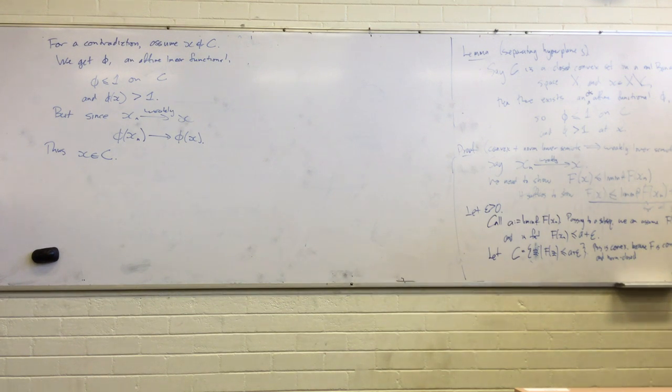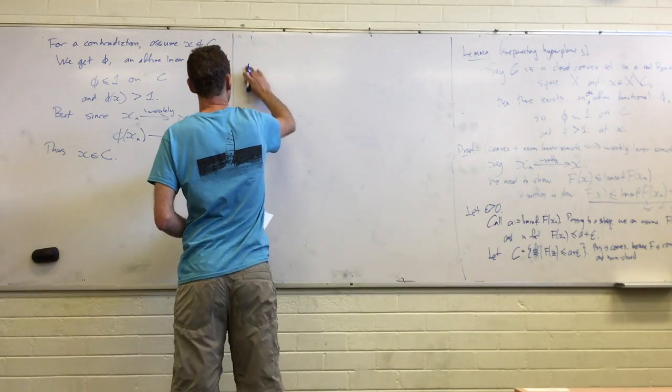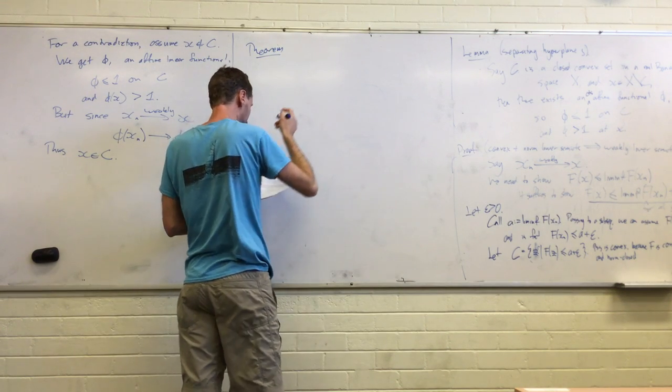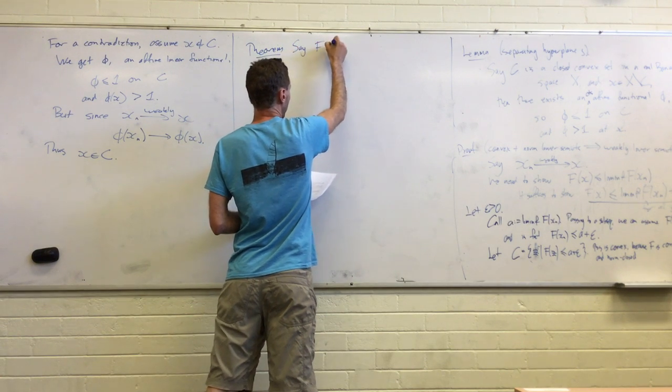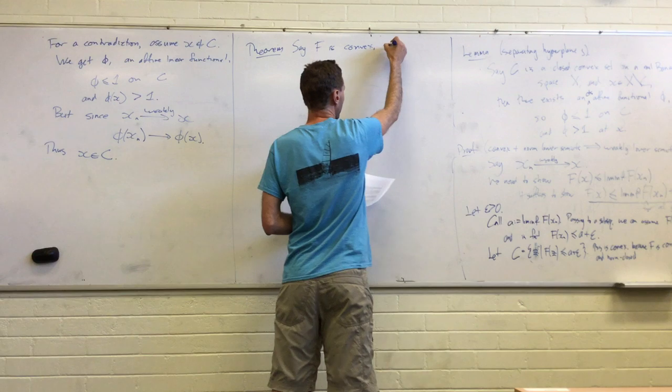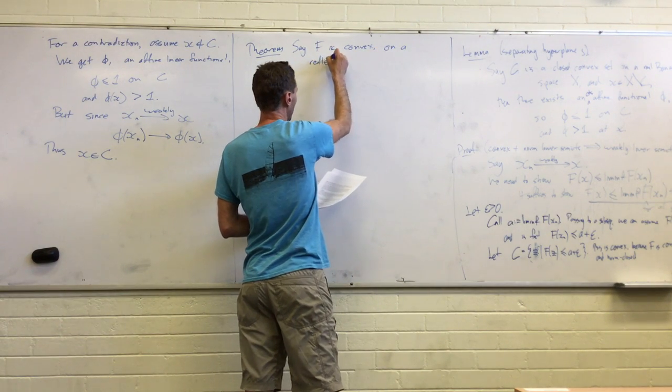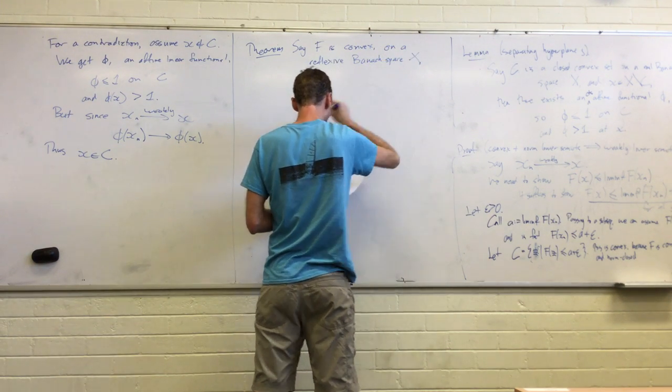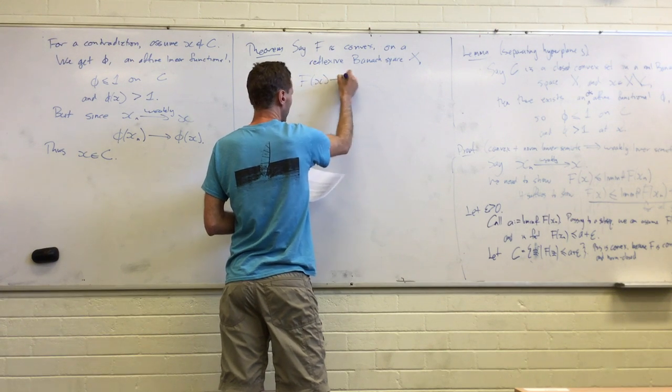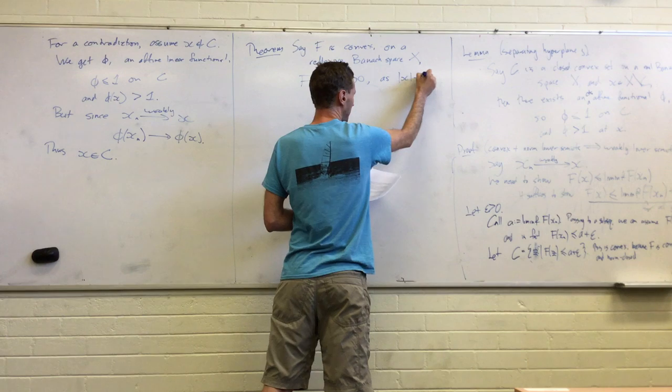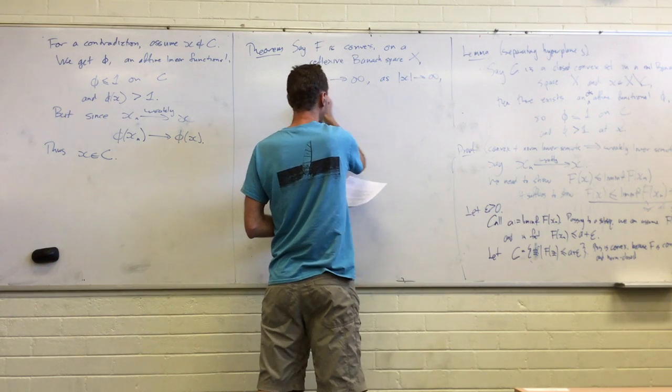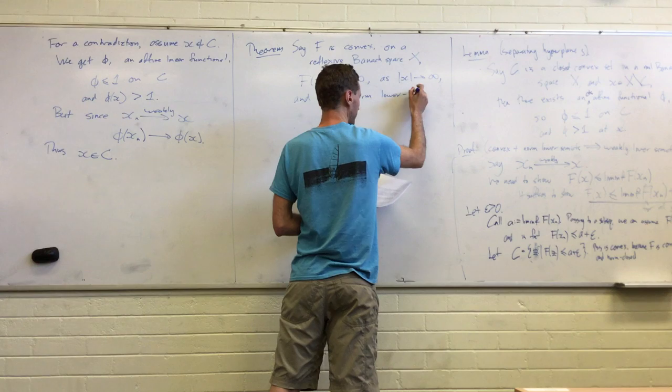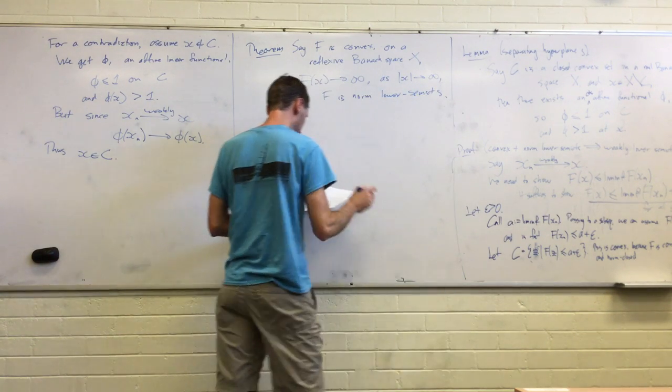Okay. Let's, I guess we can do the example next time, but we've got our theorem that packages everything about the existence of minima. Okay. So, let's say f is convex on a reflexive Banach space X. Let's say as the norm of x goes off to infinity, f(x) gets too big, and f is norm lower semi-continuous.